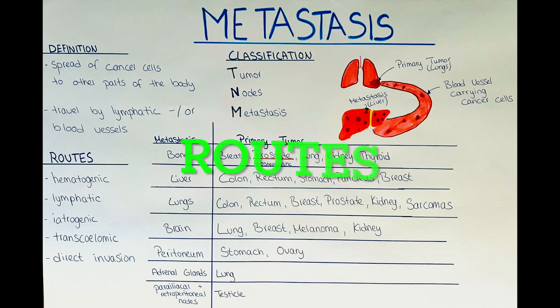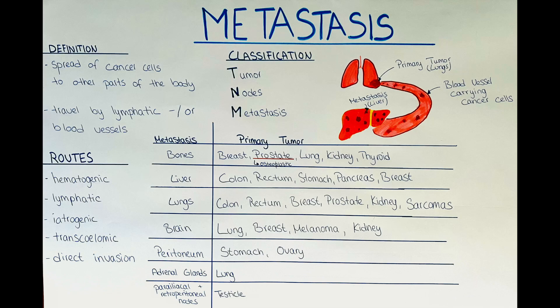In which ways can cancer metastasize? There are a few different routes of metastasis. The two classically described ones are the hematogenic spread and the lymphatic spread. The hematogenic spread of cancer cells occurs when a primary tumor invades a blood vessel and releases some of its cells into that blood vessel. The cancer cells will then go with the blood flow to another organ such as the liver or the lungs and will settle down there, thereby creating a metastasis.